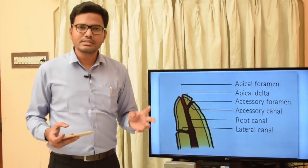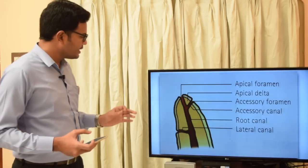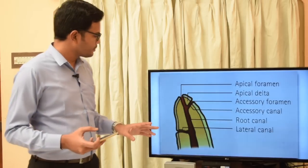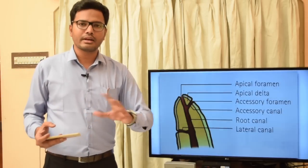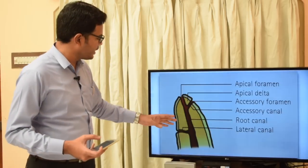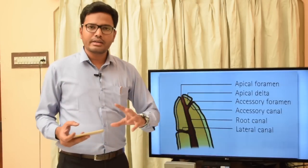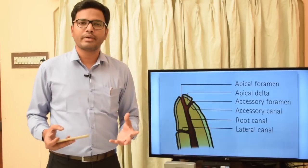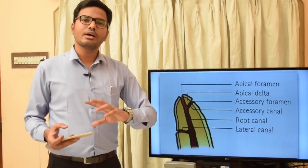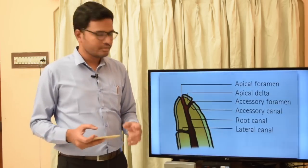The reported incidence of lateral canals is around 25 to 35 percent. There is a subtle difference between lateral and accessory canals: a lateral canal is a branch of the main canal extending only on the lateral aspects of a root, whereas an accessory canal is a branch that can be present anywhere in the apical or furcation area. In brief, all lateral canals are accessory canals, but not all accessory canals are lateral canals.